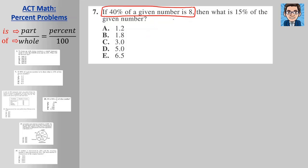So 40 percent of a given number is 8. We can use the part over the whole equals percent over 100. So we've got 40 percent, and the part that is, is going to be 8. And the of, or the whole, is what we're trying to find. So then we get 40x equals 800. Divide 800 by 40, and we get x equals 20. So that's our given number.